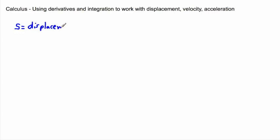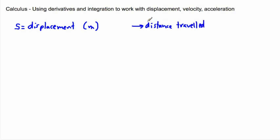The letter s is commonly used around the world for displacement, although a lot of people write it with a d. I think d makes more sense — d for displacement — but for some reason s is often used. Displacement is measured in meters. It's not exactly the same as distance traveled; it's the distance from your start point.